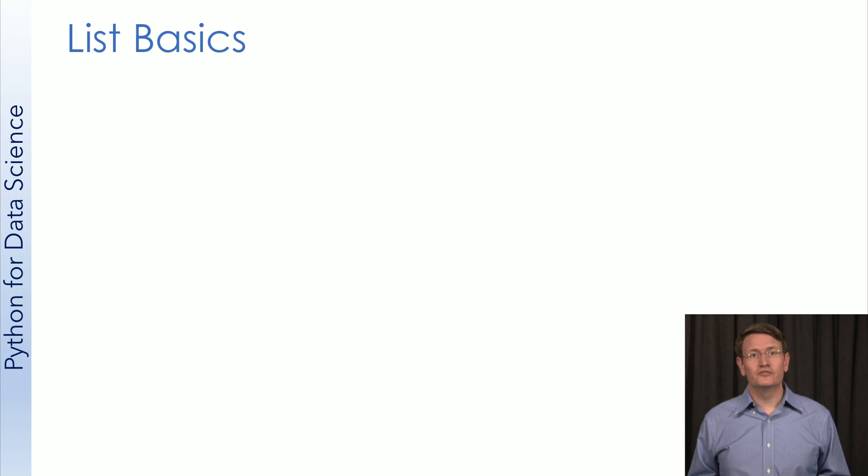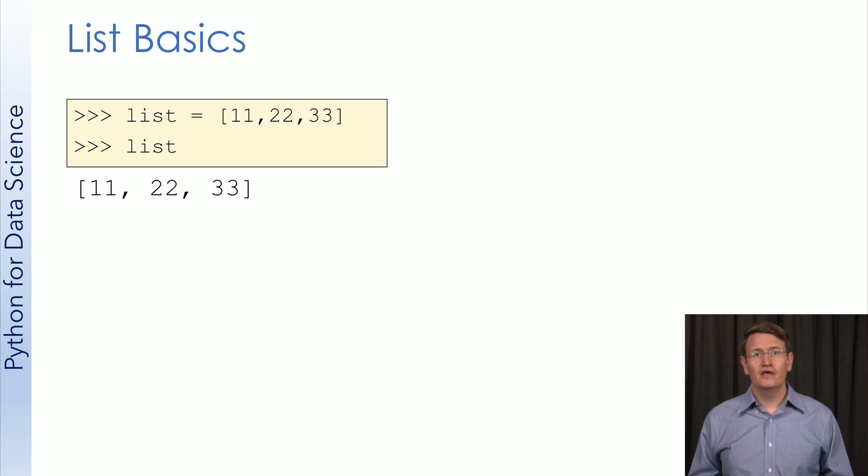Let's start by creating a list with the values 11, 22, and 33. Here, we create the list and then check that it is holding what we expect. List elements have indices which, like strings, start at zero.